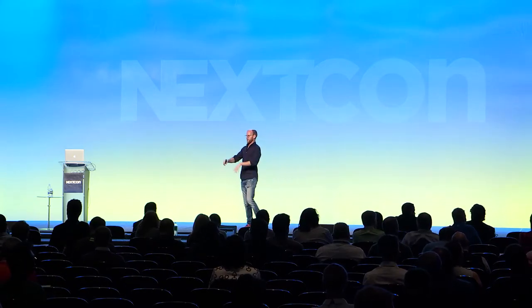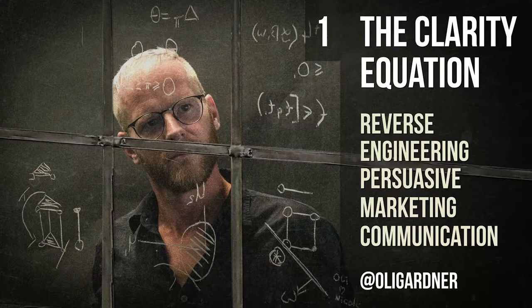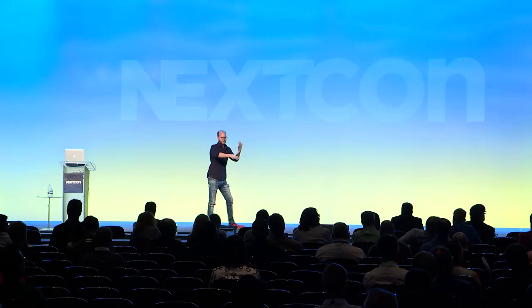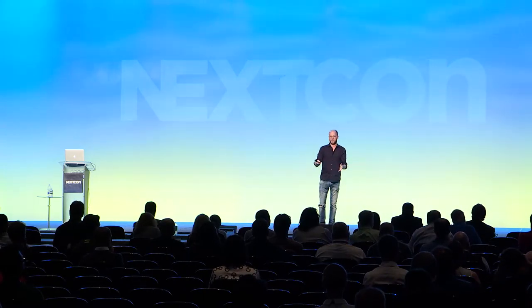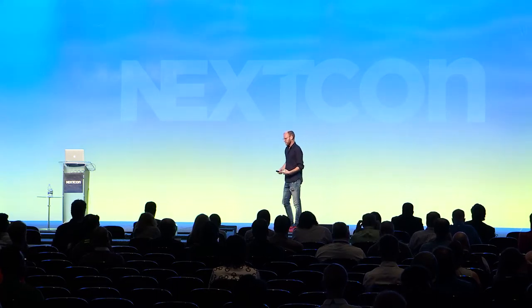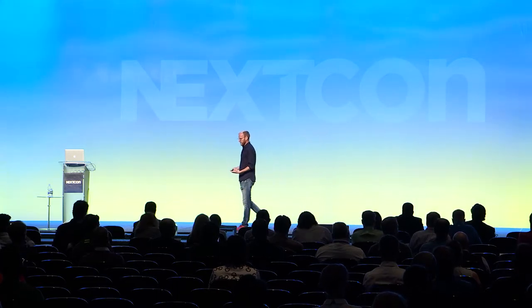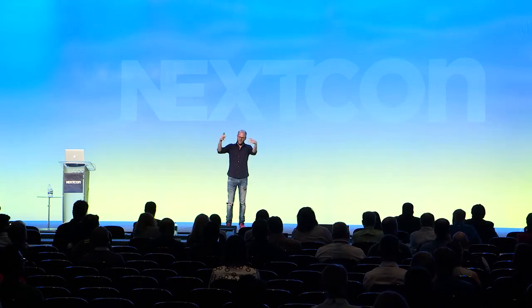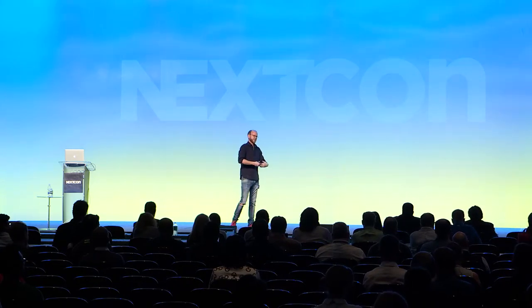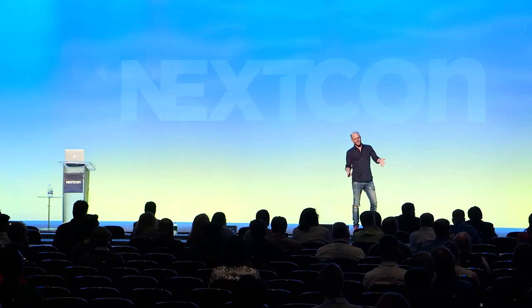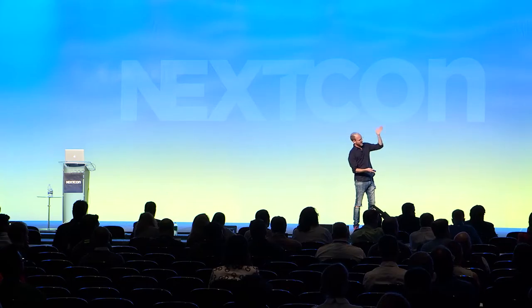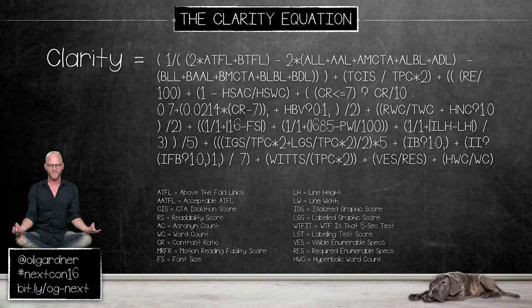So three parts to this talk. First part: the clarity equation. I've looked at everything I know about great marketing experiences and reversed engineered them. I've added in data from Unbounce about landing pages, and data from Wistia about video — they've been amazing and given me data people haven't seen before. I've brought these all together, reverse engineered it, and come up with an equation that defines clarity. Slightly ironic that it's about clarity and it's not clear at all. But it breaks down into seven sub-equations.